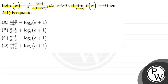Option A: (e+2)/(e+1) minus ln(e+1). Option B: (e+1)/(e+2) plus ln(e+1). Option C: (e+1)/(e+2) minus ln(e+1). Option D: (e+2)/(e+1) plus ln(e+1).